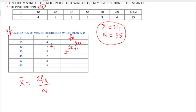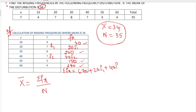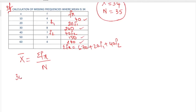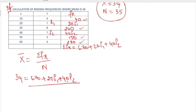For 30 into 8 we get 240. The next unknown frequency is f2, so we write 40 into f2. Multiplying all known values: 40, 150, and 240. The summation fx equals 670 plus 20f1 plus 40f2.